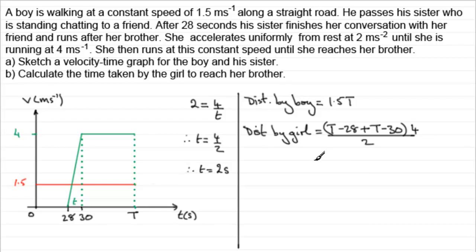And if we simplify this we've got t plus t which is 2t, and then minus 28 minus 30 is minus 58. And we can cancel the 2 into the 4 giving us 2. And so if we expand the bracket we get 4t minus 116.